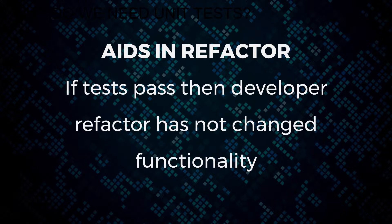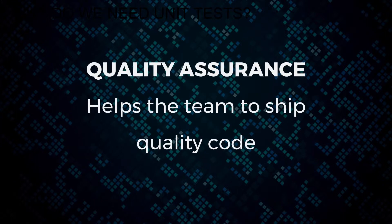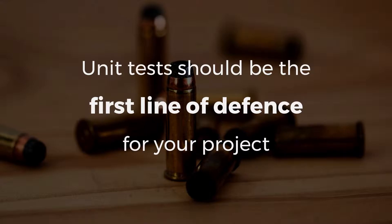Unit tests aid in any refactor — you first run the tests, they all pass, then a developer can refactor and check that functionality has not changed. They also help you design your API: while writing tests, you're deciding what functions to call, what endpoints to expose, essentially defining the API. Quality assurance-wise, tests help your team ship quality code. I'd always advise having a suite of unit tests and integration tests to help you ship to production. Your unit test should be the first line of defense for your project.